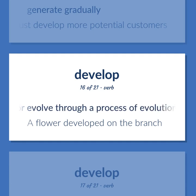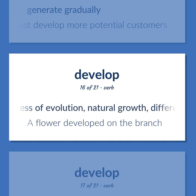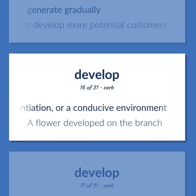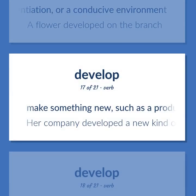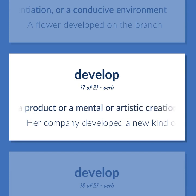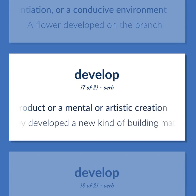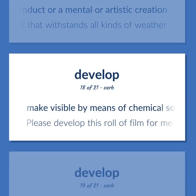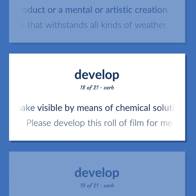Develop: Through a process of evolution, natural growth, differentiation, or a conducive environment — a flower developed on the branch. Make something new, such as a product or a mental or artistic creation — her company developed a new kind of building material that withstands all kinds of weather. Make visible by means of chemical solutions — please develop this roll of film for me.